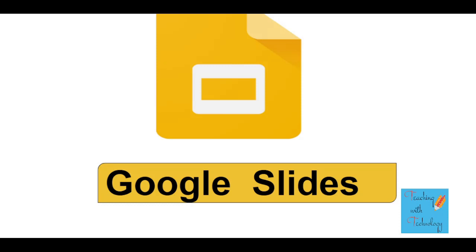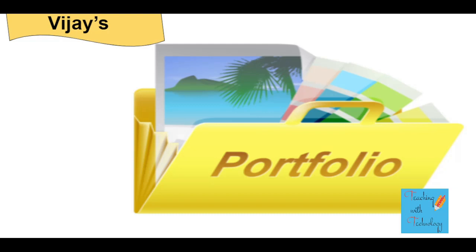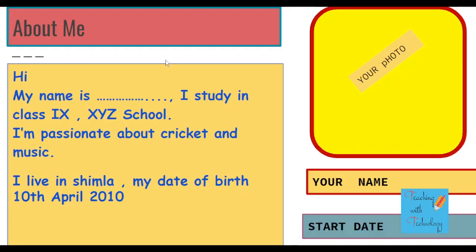I'm not going to teach you all those basics — I'm simply going to give you ideas for preparing your digital portfolio. To start with, give a nice name to your portfolio, like 'Vijay's Portfolio.' Then include your introduction: write something like 'Hi, my name is Vijay, I study in class [X] at [school name]. I'm passionate about cricket, music,' or whatever your passions are. Then add your city, date of birth, or any other relevant information you want to share.